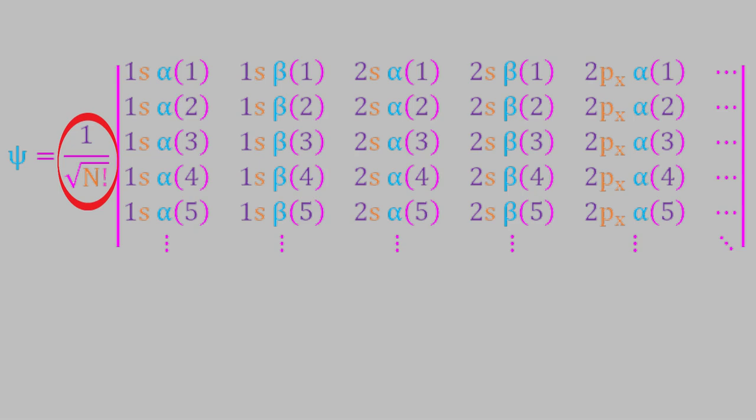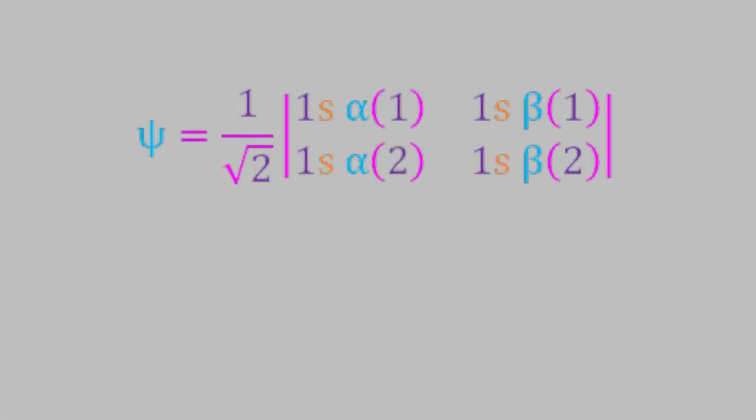There's one more thing to notice about the way we use determinants to represent wave functions. Let's look at the one for helium again. As we saw earlier, there's a different column for each possible combination of the type of orbital and the spin.